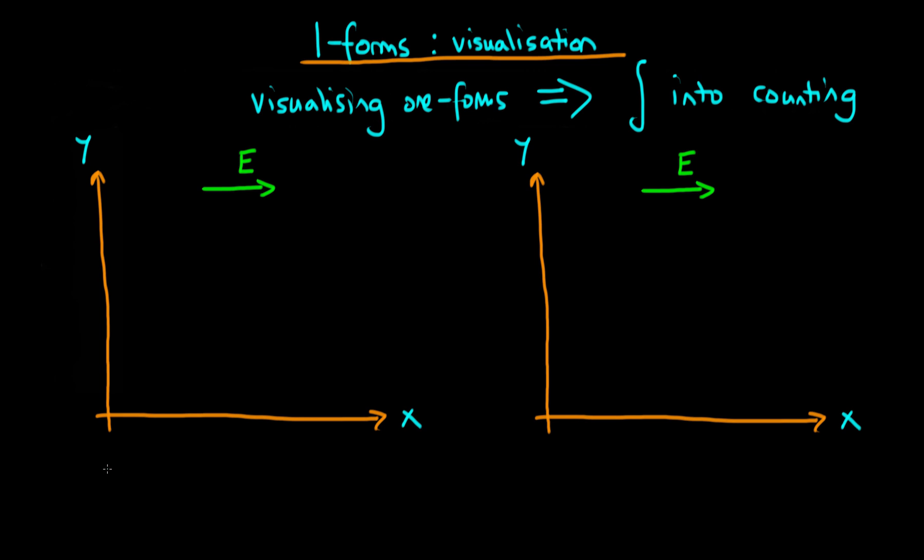In vector notation we can work out the work done by minus q times the integral across the curve L of the electric field dotted with the differential line element dl. So q here is the charge—sometimes I miss off the minus one here, so sorry if that conflicts with previous videos. We're imagining that there is some curve that we are moving our charged particle along in the field.